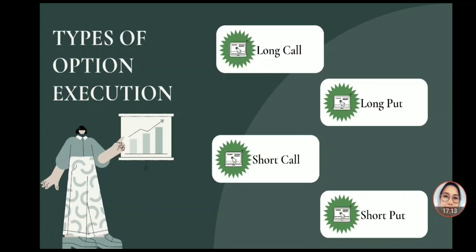Sebagai pelaku short call, hasilnya akan dicapai sama dengan premi yang diterima oleh long call. Jika harga sekuritas turun, tapi kita akan kehilangan uang jika harga sekuritas naik lebih dari harga awal ditambah premi. Yang keempat yaitu short put: strategi ini dilakukan jika saat kita yakin harga sekuritas akan naik dan menjual kepemilikan tersebut. Sebagai short put, imbalannya sama dengan premi yang diterima oleh long put jika harga sekuritas naik. Namun jika harga sekuritas bergerak turun di bawah harga awal dikurangi premi, pelaku short put ini akan kehilangan uang atau akan merugi.